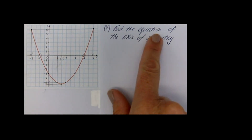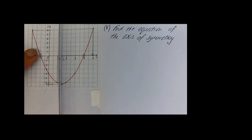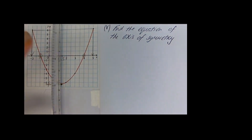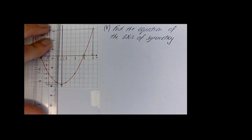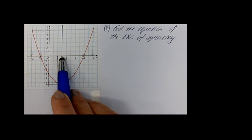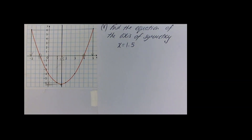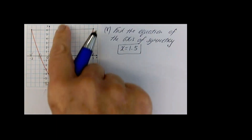Now we're going to look at finding the equation of the axis of symmetry. The axis of symmetry is basically a line that acts like a mirror line on the graph, where one side would be a reflection of the other. Right down here in the middle is the line I'm looking for — there is my axis of symmetry. Given that it is a vertical line here at 1.5, that is the line x is equal to 1.5, and that is therefore the equation of that vertical line.